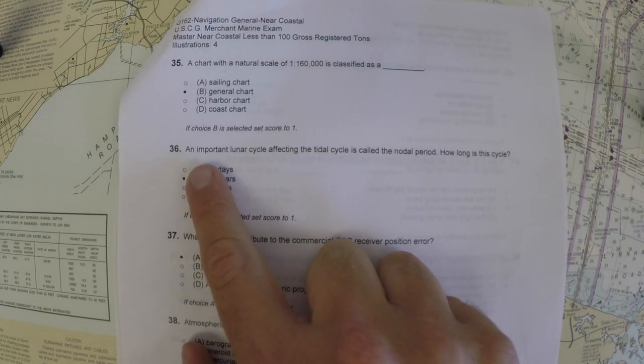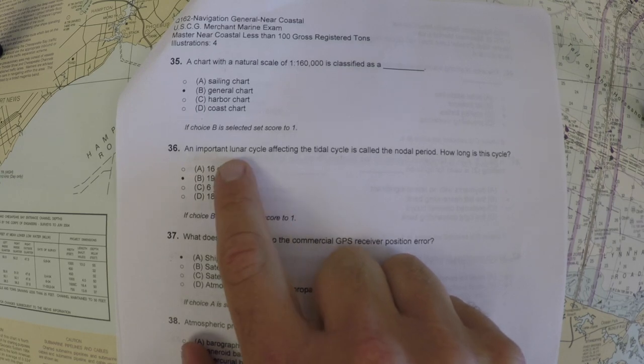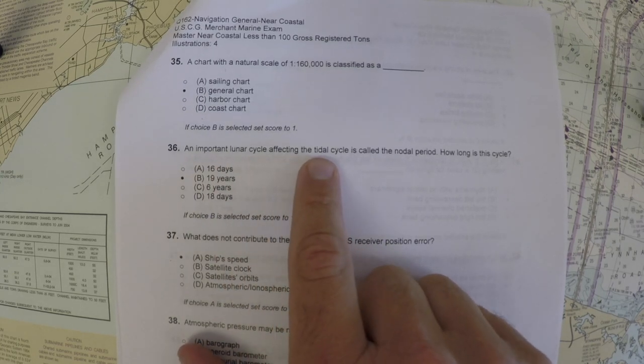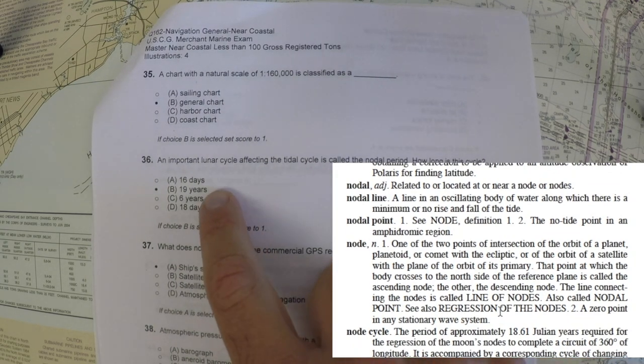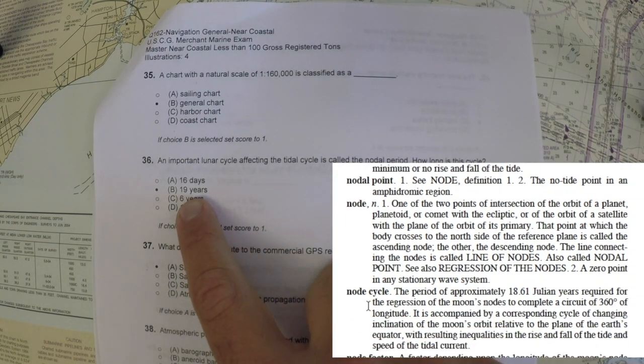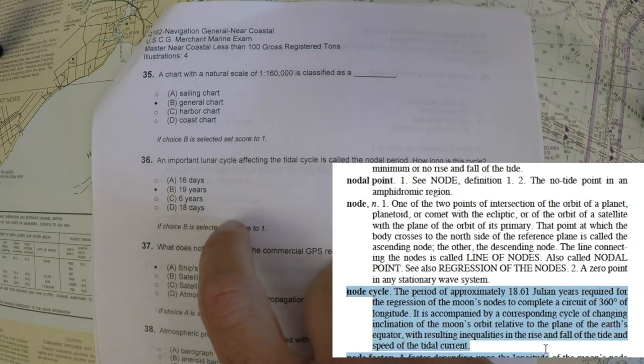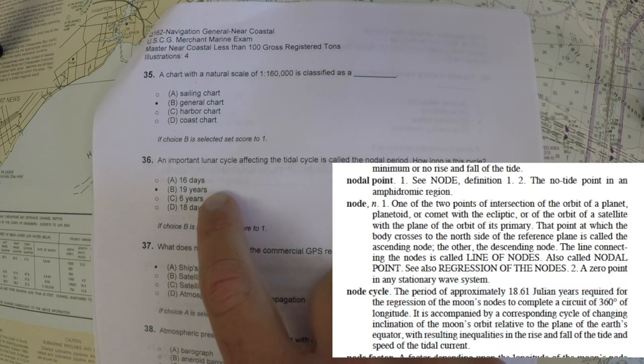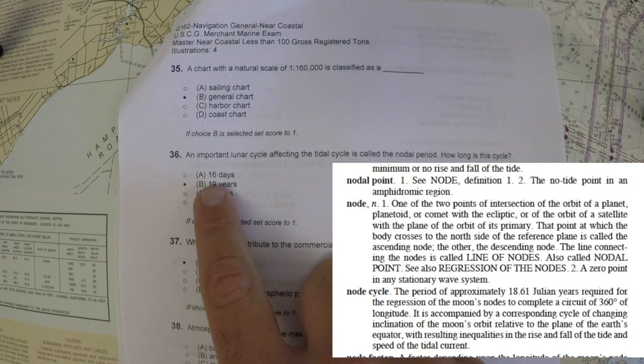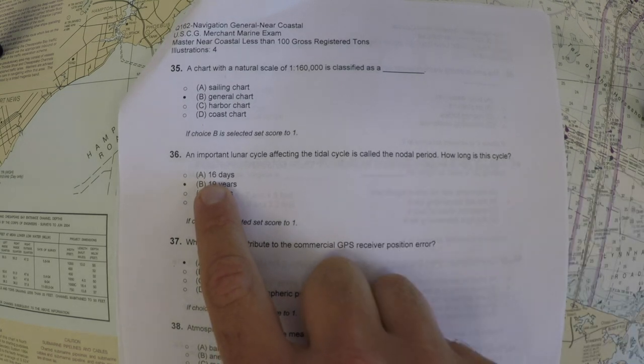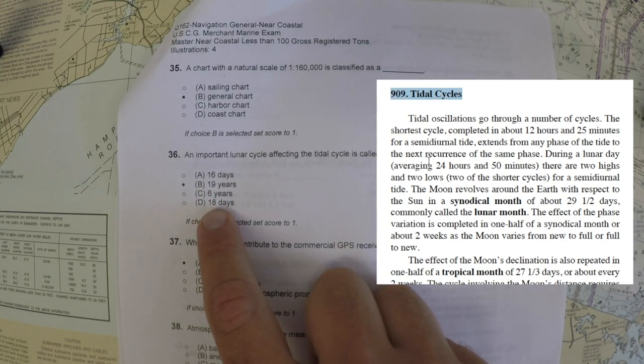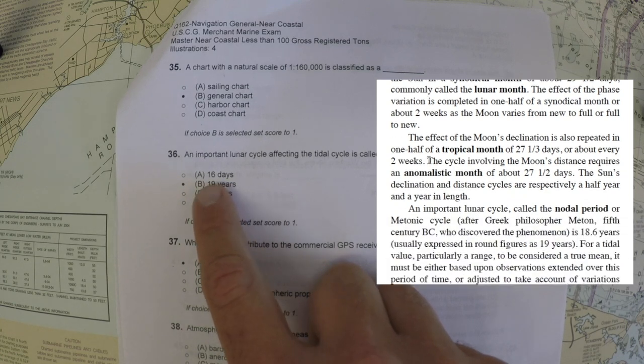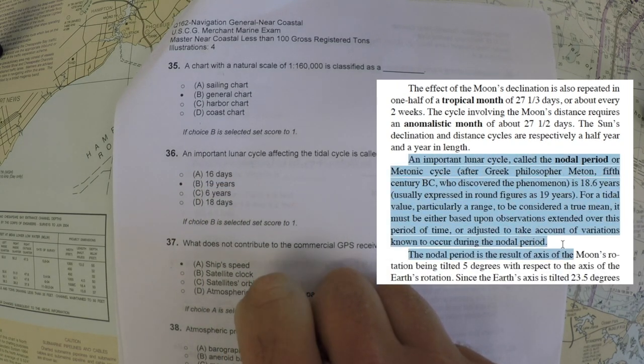The next question is pretty interesting. An important lunar cycle affecting the tide cycle is called the nodal period. How long is this cycle? The correct answer is slightly under 19 years, about 18.7 or 18.6 years. Looking at the answers, you got something on the order of 16 days (two weeks), something on the order of 20 years, six years, and 18 days. The 16 day thing is the new moon to full moon cycle.